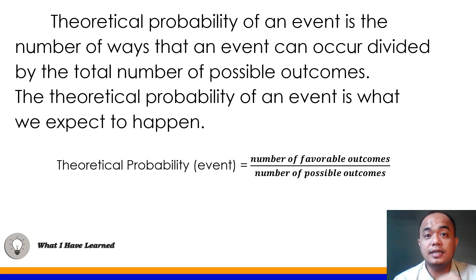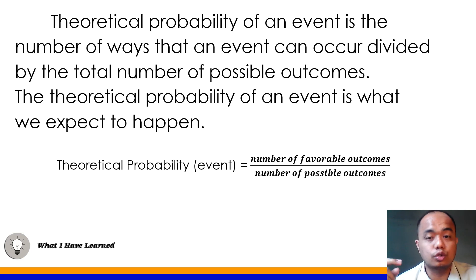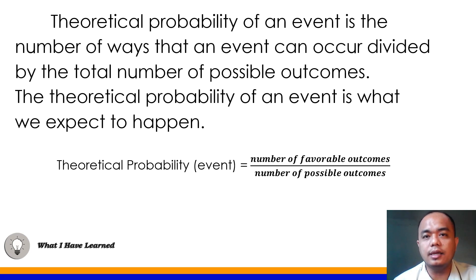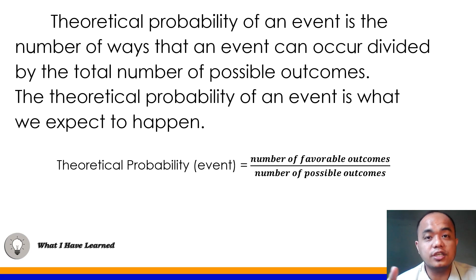For example, when you toss a coin, there are two possible outcomes when we flip a coin, so we make 2 our denominator. If you ask the probability of landing on the head part, write 1 in the number of favorable outcomes, since there is only one head on a coin. So the probability of landing on heads when you flip it is 1/2 — you are expecting a 50% chance. That's theoretical probability.